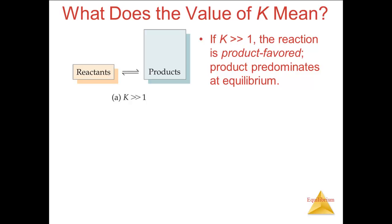Remember that the form of the equilibrium expression is products over reactants. If the value of K is much greater than 1 — by much greater we mean by several powers of 10, that is at least 100 times as much — that means the numerator, the concentrations of the products, is much greater than the denominator, the concentrations of the reactants. This implies that the amounts of products are much greater, which is what we mean by the phrase: the product predominates.